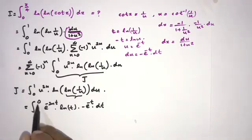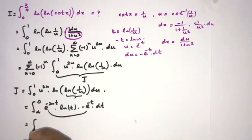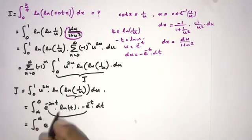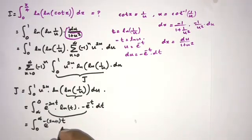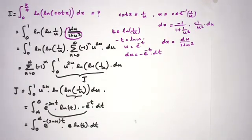Changing the boundaries — the minus sign cancels the reversal — and simplifying, we can write the integral from 0 to infinity of e^(−(2n+1)t) times ln(t) dt.